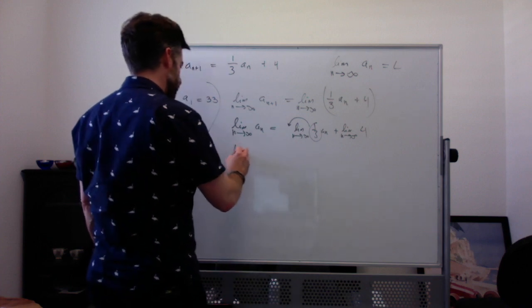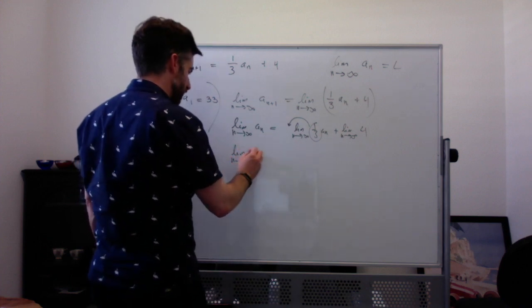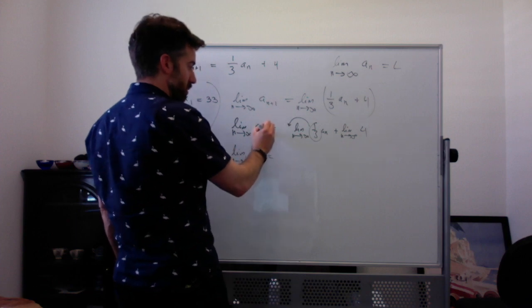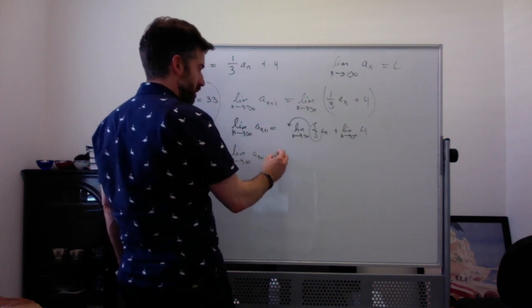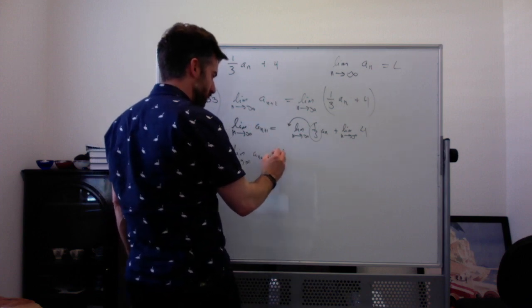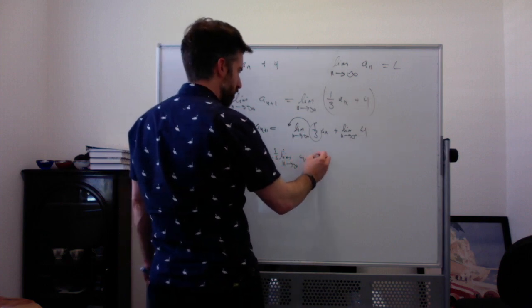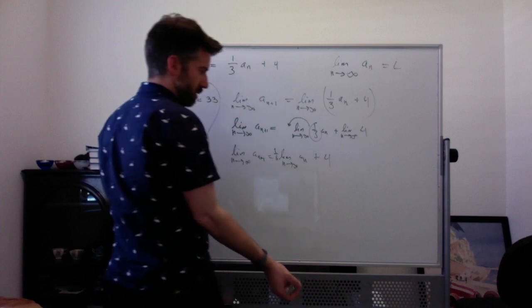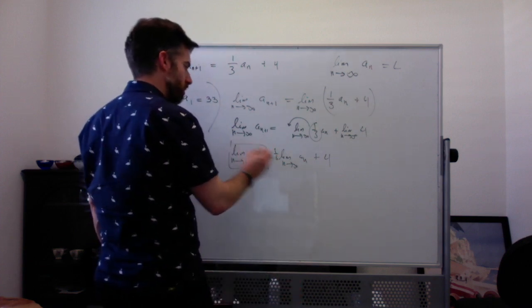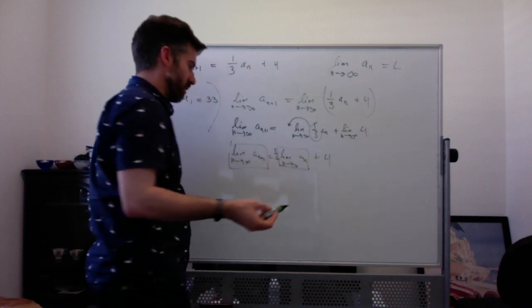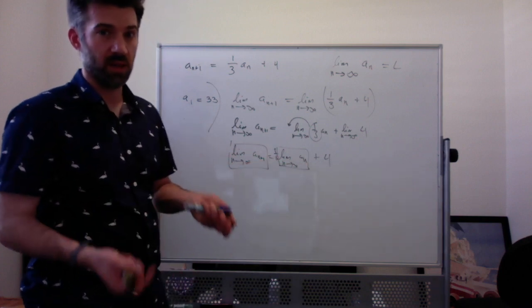So we have the limit as n goes to infinity of A sub n plus 1, equal to 1 third times the limit as n goes to infinity of A sub n plus 4, because the limit of a constant is just a constant. And this is L, and this is L, right, because the nth term and the n plus 1 term both go to the same limit.